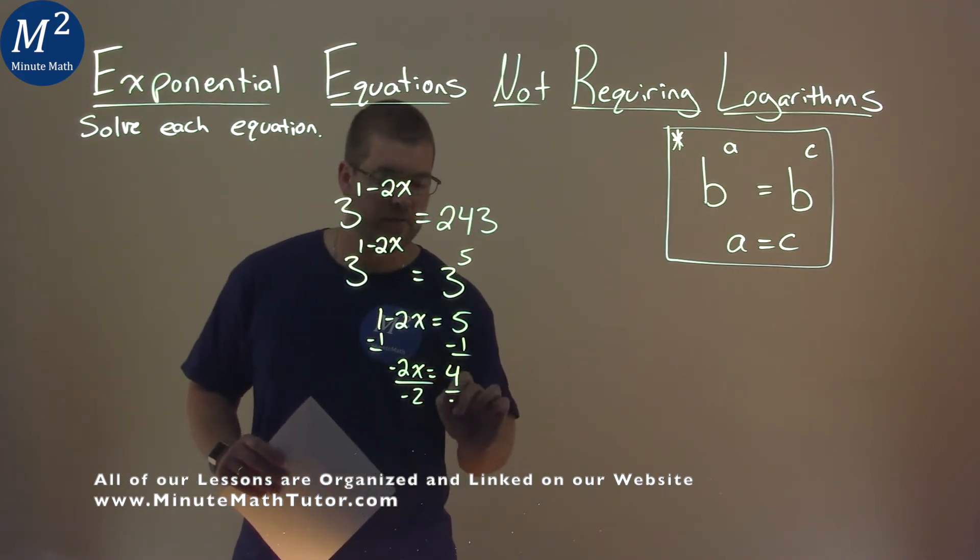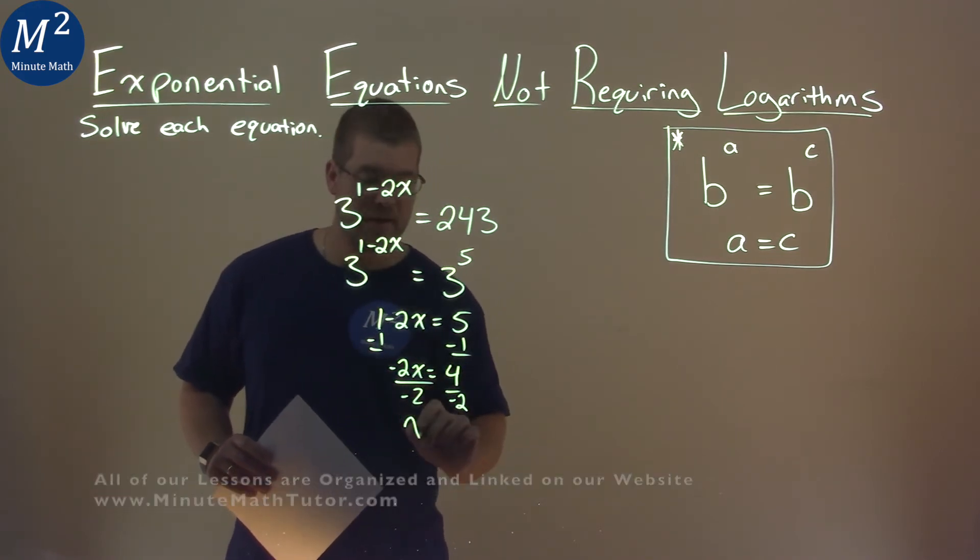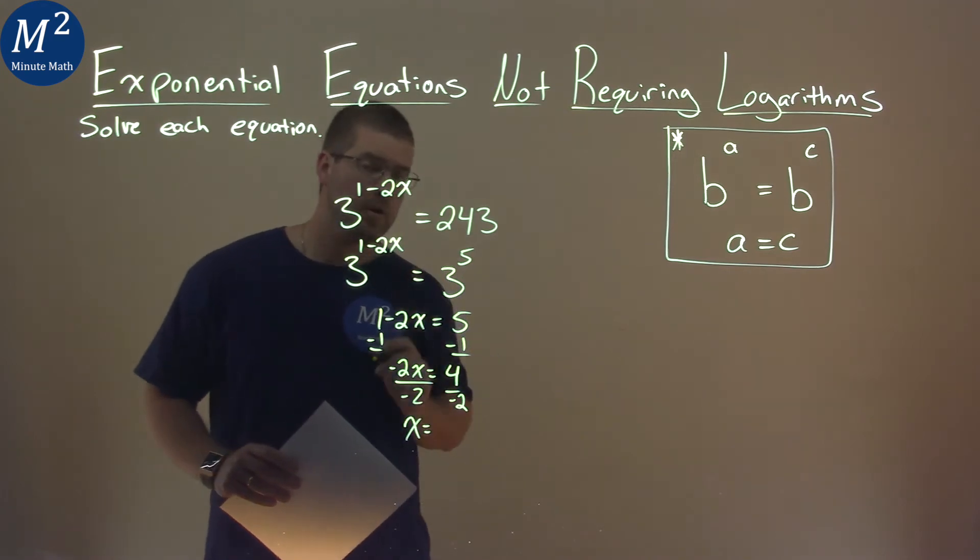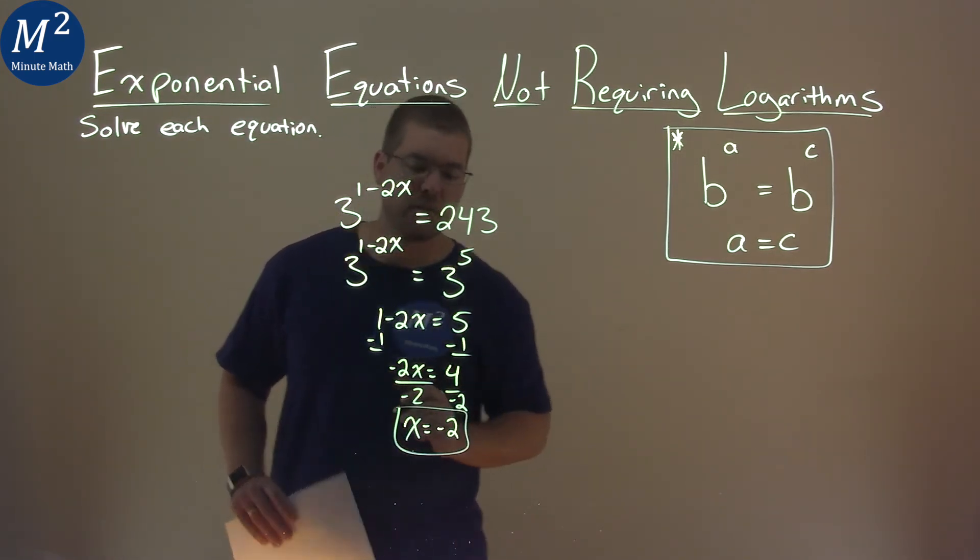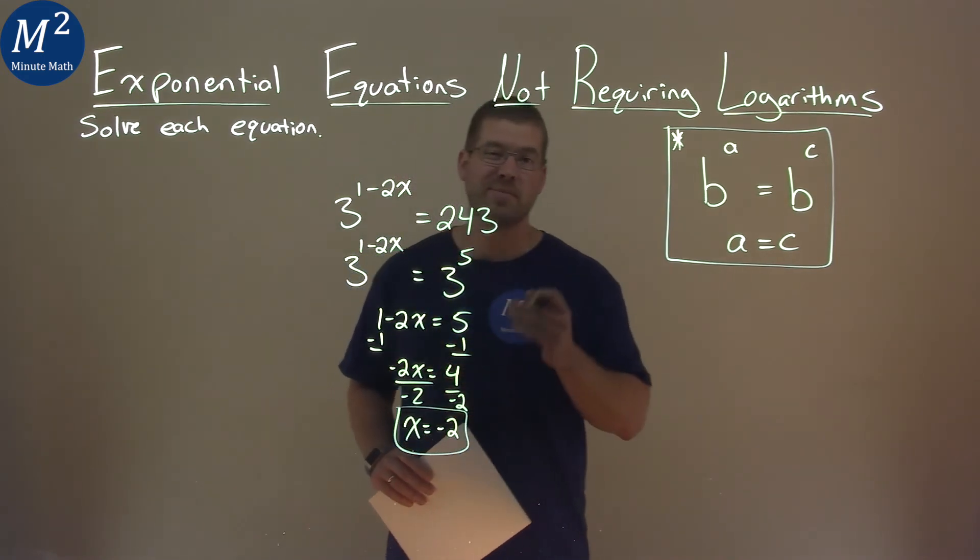Divide both sides by negative 2, and not too shabby, x is completely by itself. 4 divided by negative 2 is negative 2. And so my final answer here is just x equals negative 2.